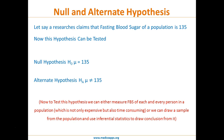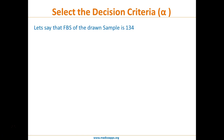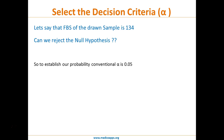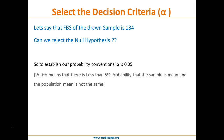Let's say the fasting blood sugar of the sample is 134. Can we reject the null hypothesis? To determine this, we must establish our probability or decision criteria — the level of significance — which is 0.05. Alpha of 0.05 means there is less than a five percent probability that the sample mean and the population mean are not the same. In medical hypothesis testing, the conventional alpha is 0.05.